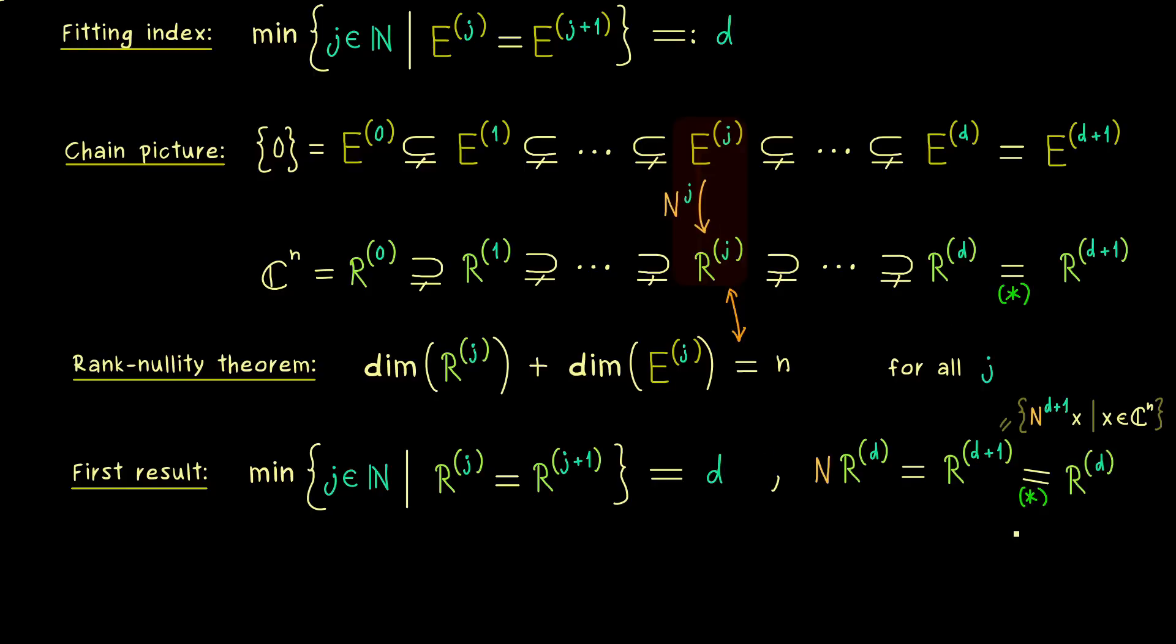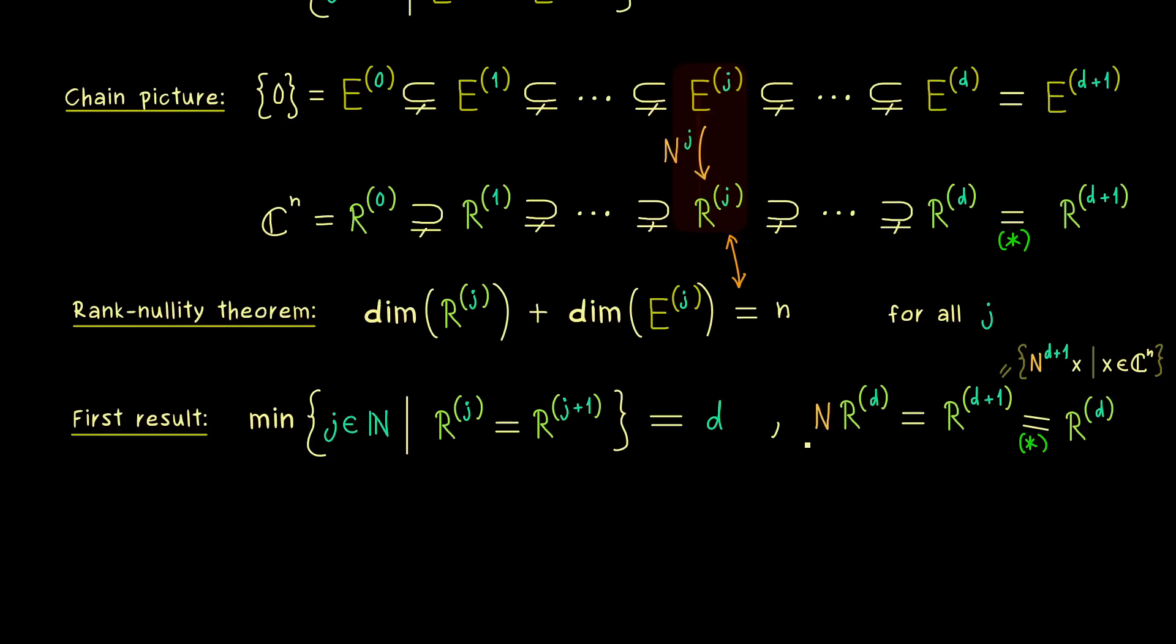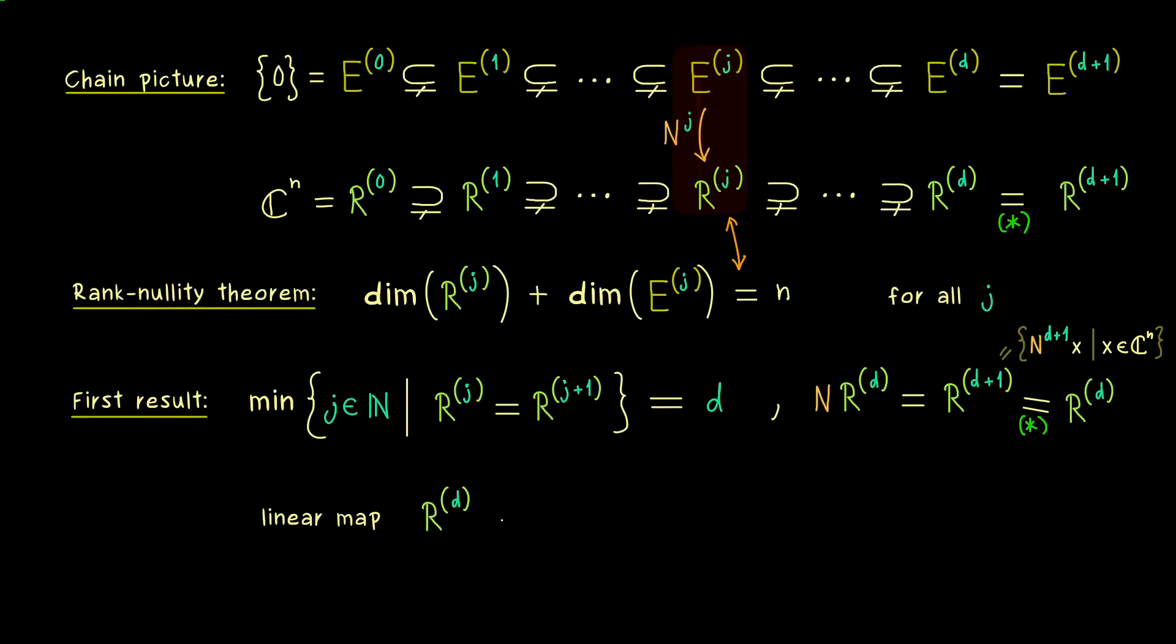And this is a crucial result, because it tells us that we have a surjective map. More precisely, we have a linear map from R^d to R^d, given by the matrix N, and this is surjective. However, since we have linearity and the same dimension on the right and the left-hand side, we actually have a bijective map. So also a very nice result: for our fitting index d, our matrix N represents an isomorphism between the two ranges.